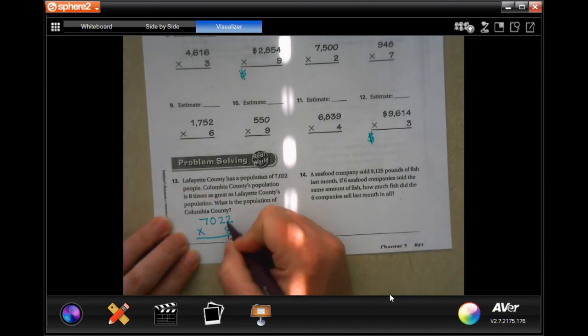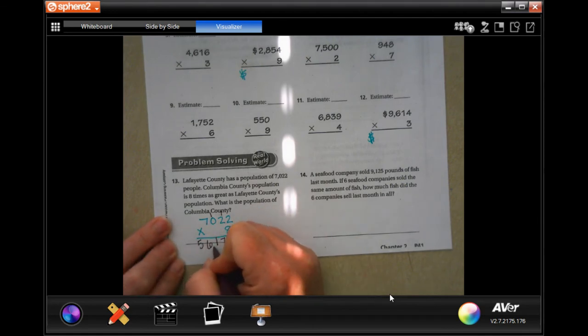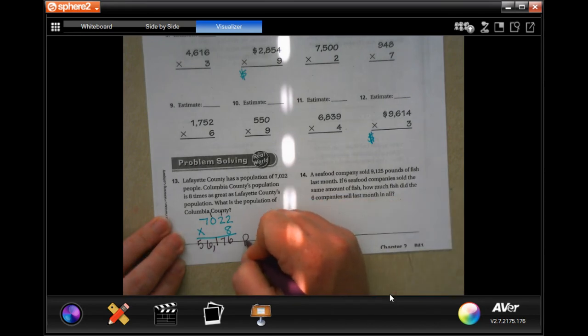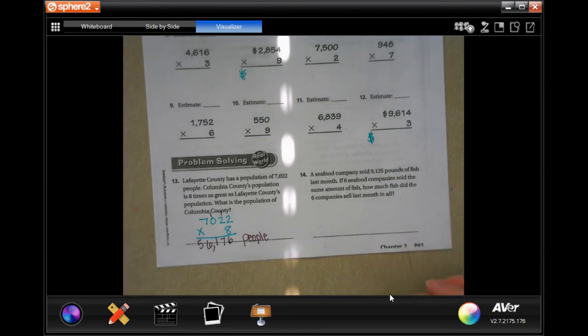8 times 2, 16, carry the 1. 8 times 2, 16, plus 1, 17, carry the 1. 8 times 0, 0, plus 1, 1. 8 times 7, 56. 56,176 people. Since we're talking about population.